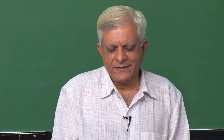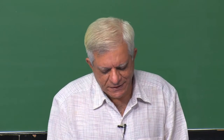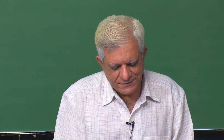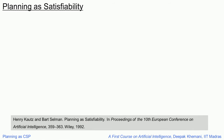We can also do the same for SAT. We can convert it into a SAT problem, and that is in fact what was done by Kautz and Selman. They wrote a planner called SATplan which, as the name suggests, converts the planning problem into a SAT problem. It is a hugely successful implementation in the planning competition.